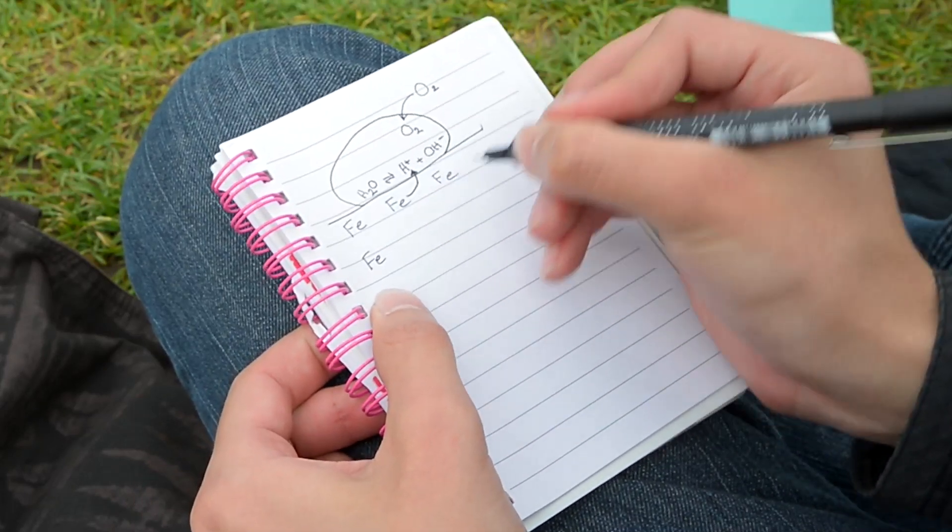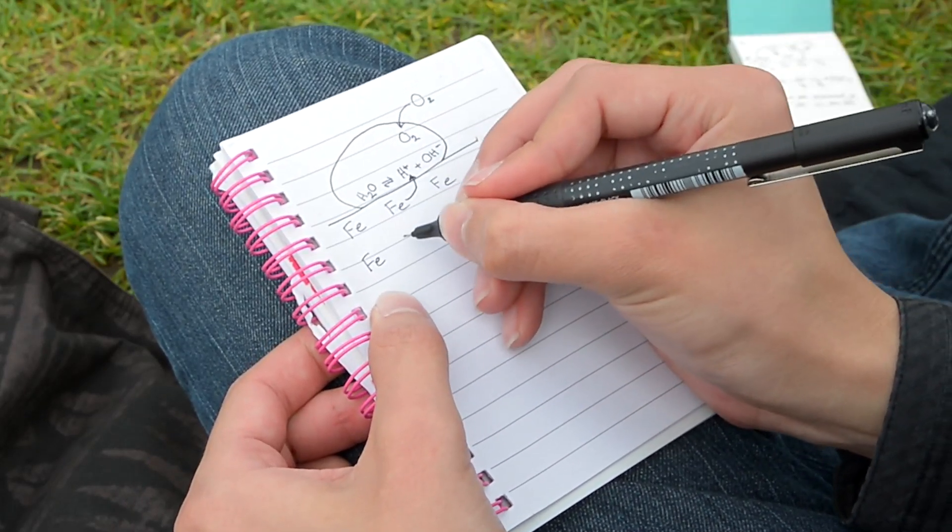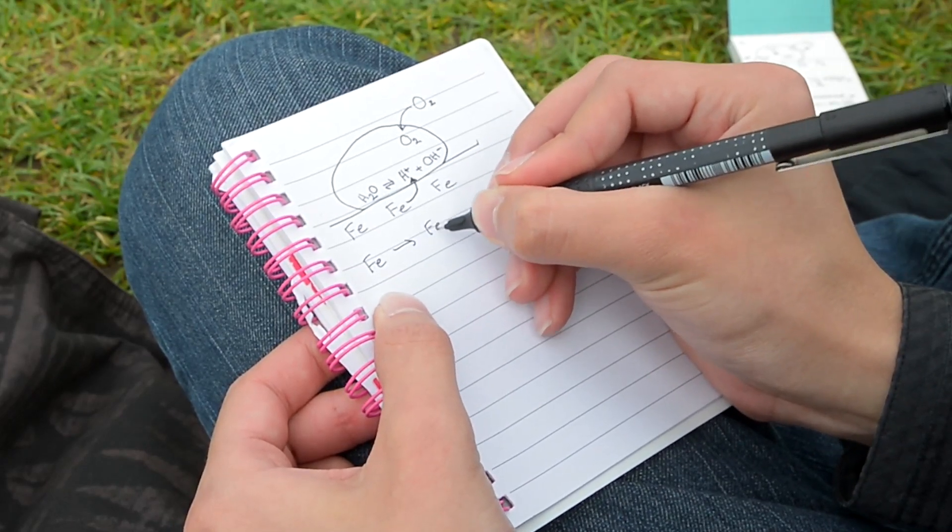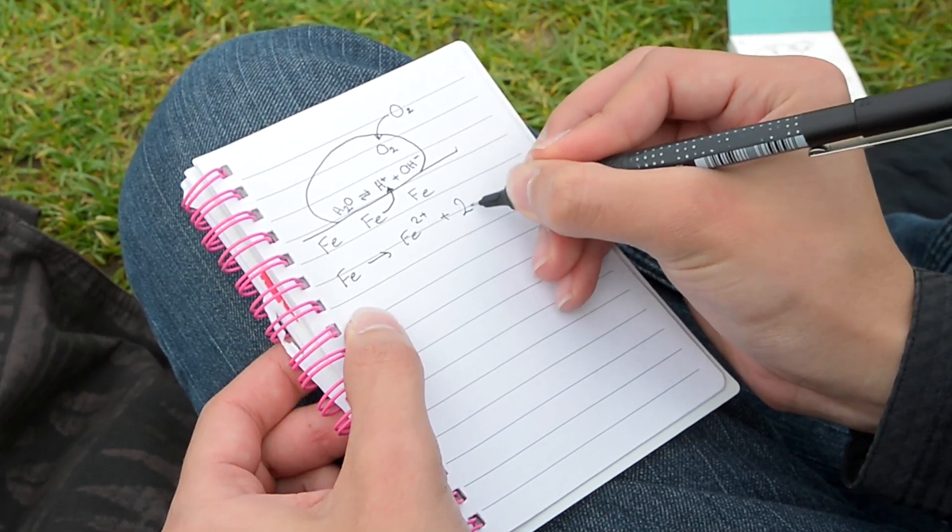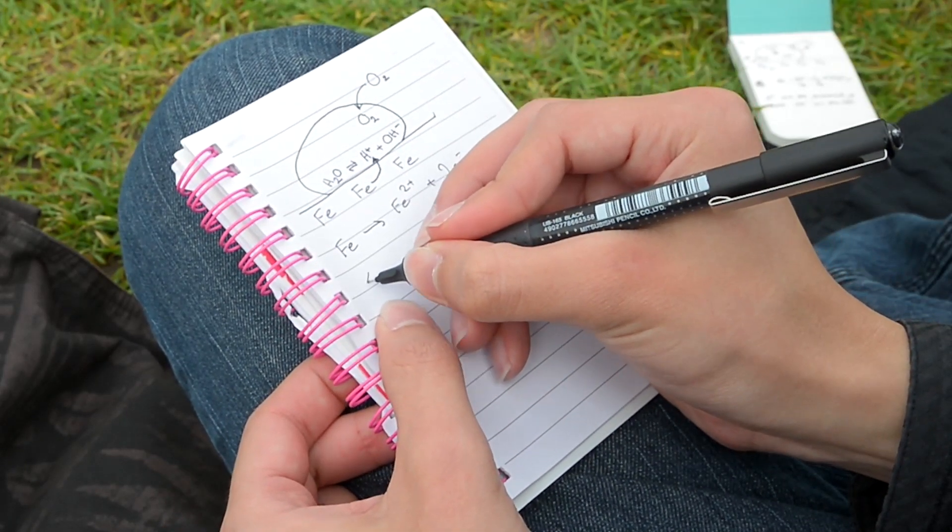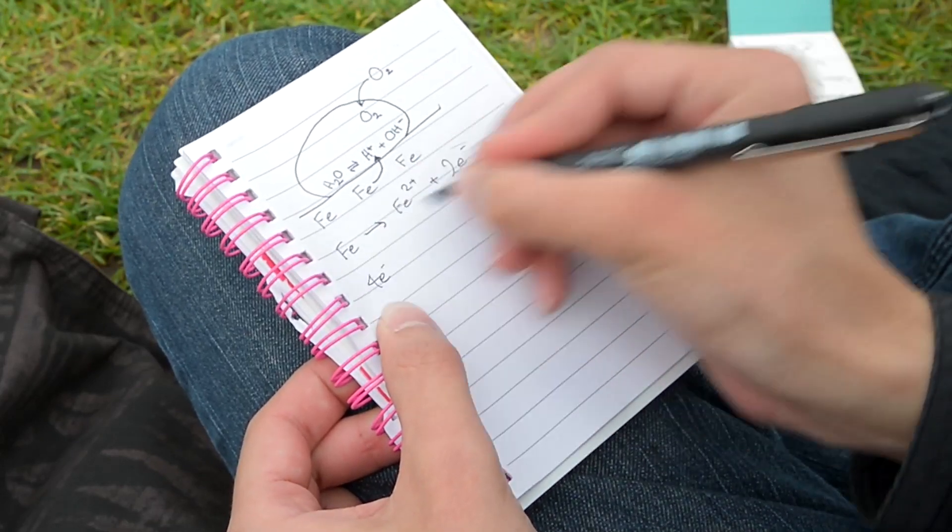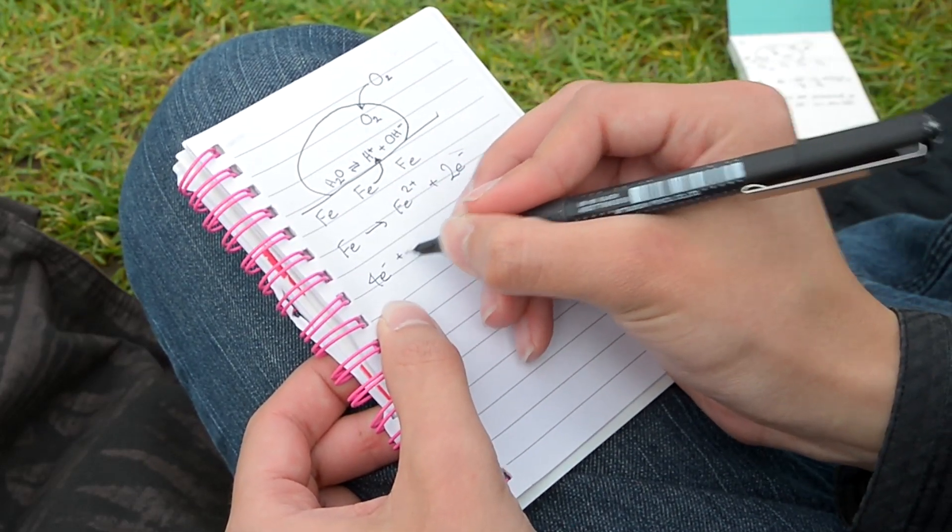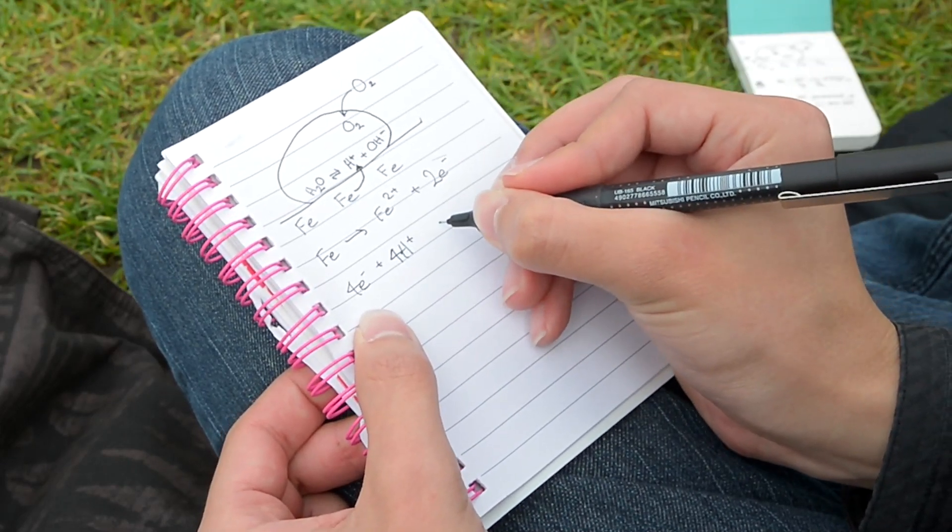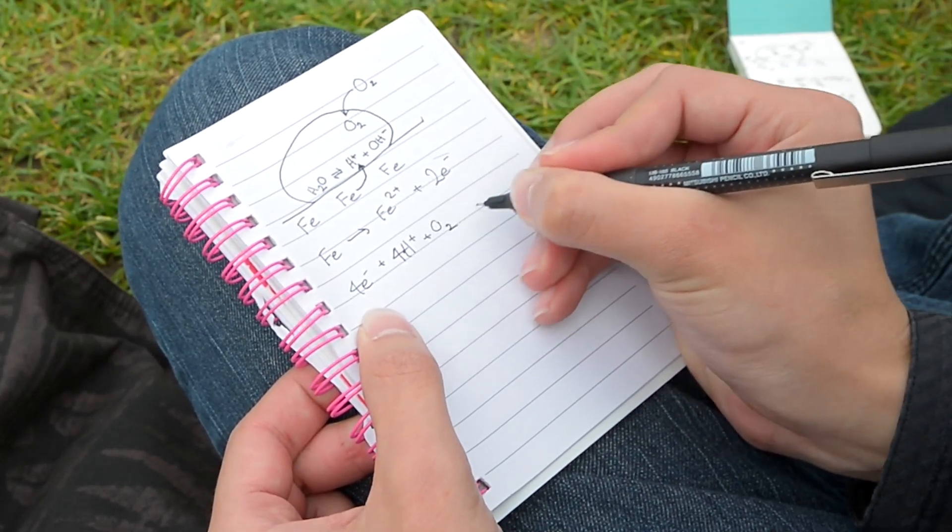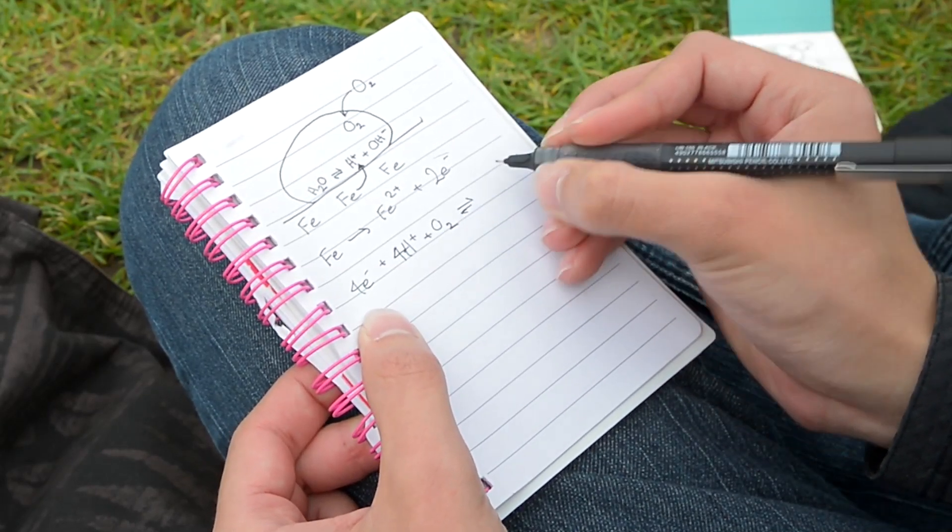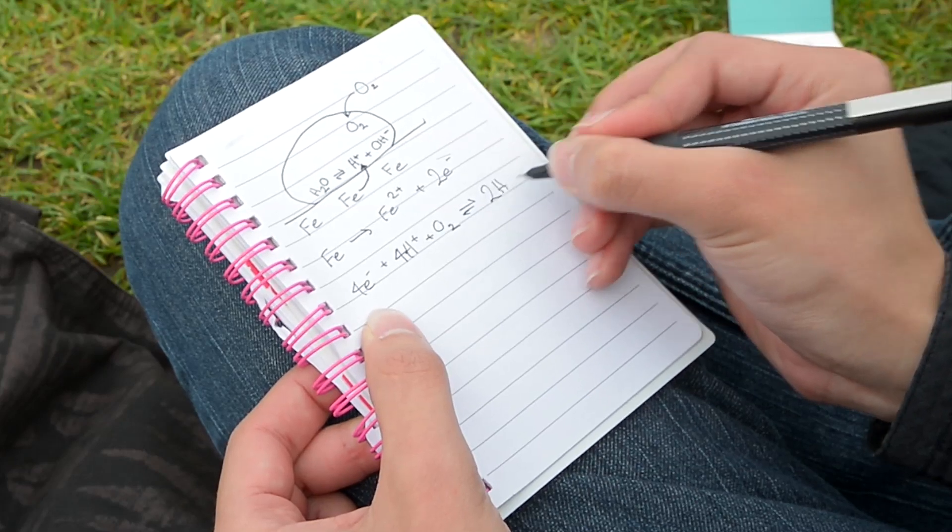So here's the reaction here. Fe. It gives away its two electrons. So it goes to Fe2+, and it's also given away its two electrons. Those electrons go to the... So I need four of them now. So two of this equation here, plus four lots of hydrogen ions. They will react with some oxygen gas, aqueous. And they'll do a forward reaction and backward reaction, equilibrium here, form two water molecules.